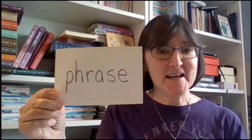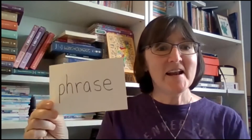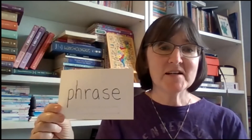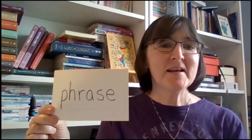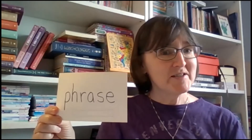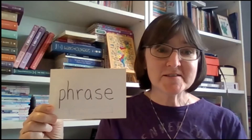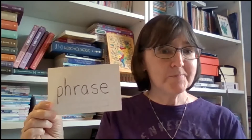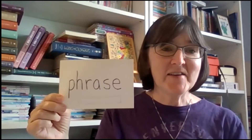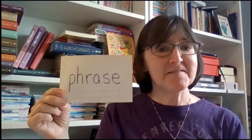We have learned that a group of words can be called a phrase or a clause. Both of these are a group of words. The difference is that a phrase does not have a subject and a verb in it. For example, I jump into the pool. Where do I jump? Into the pool. Into the pool is a phrase — it is a group of words that tells me where I jump, but it does not have a subject and a verb. Into the pool is not a sentence. It is just a phrase.